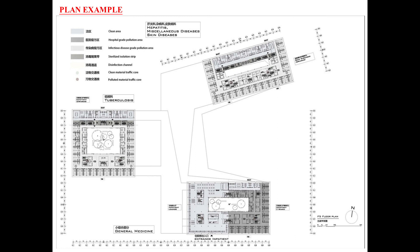Plan example: it shows the clean area, hospital-grade pollution area, infectious diseases-grade pollution area, sterilized isolation strip, disinfection channel, clean material traffic core, and polluted material traffic core. This area is patient rooms.